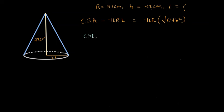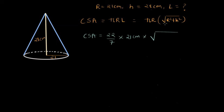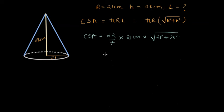CSA = π × r × √(r² + h²). Using 22/7 for π and r = 21 centimeters, we write: CSA = (22/7) × 21 × √(21² + 28²). This will give us the curved surface area for the cone.